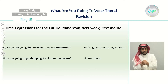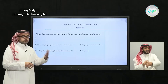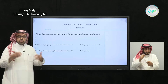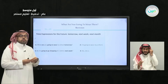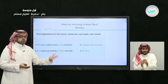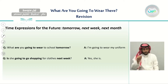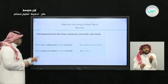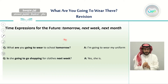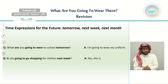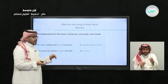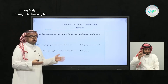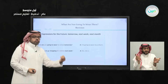We also talked about time expressions. Not only does 'going to' indicate future plans, but we can add time expressions — words or phrases that indicate the future. For example: tomorrow, next week, and next month. When we use these expressions in a sentence, it means we're talking about something that will happen in the future.